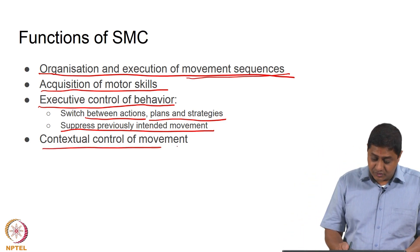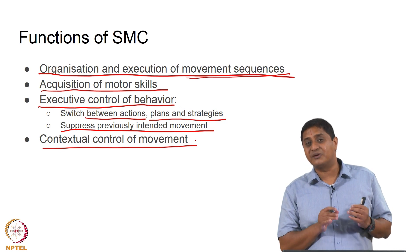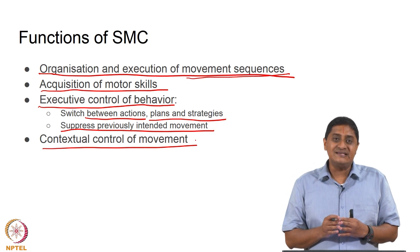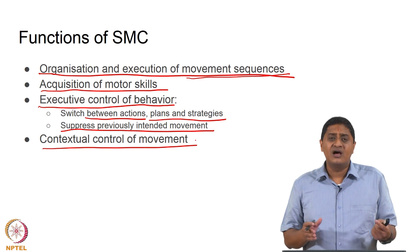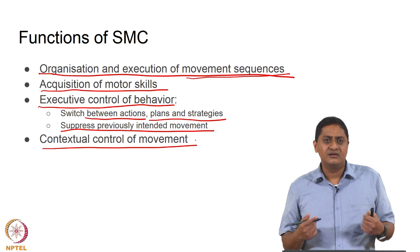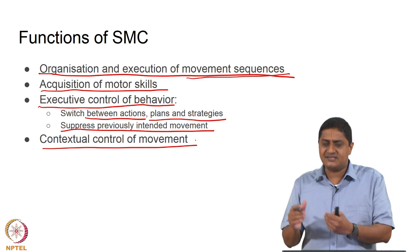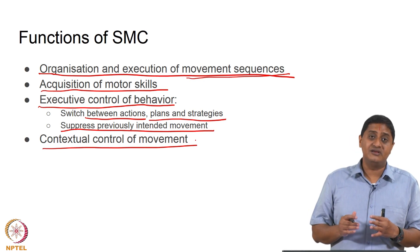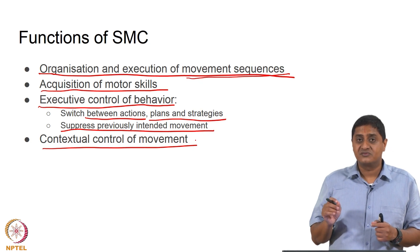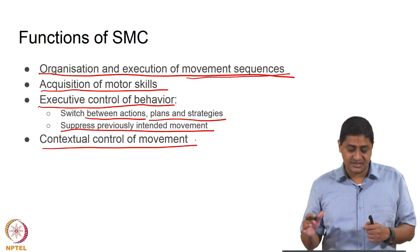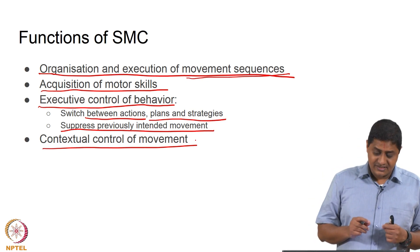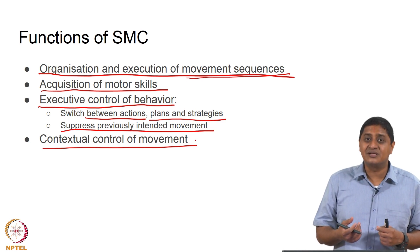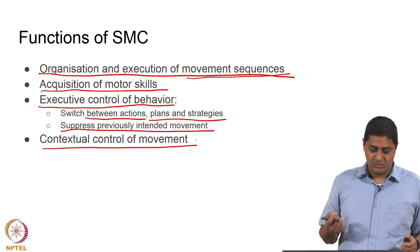Compare this with primary motor cortex, which is primarily an execution engine. We discussed at length what M1 encodes — whether kinematics, kinetics, or muscle function — and what happens during lesions. In contrast, the supplementary motor area provides contextuality and appropriateness to movement. It is not the execution engine, but provides contextual control over behavior.